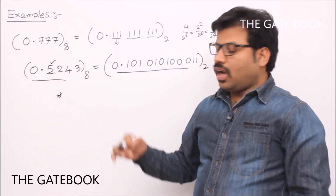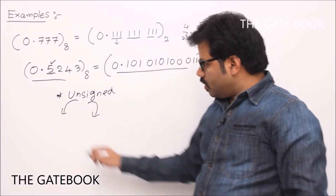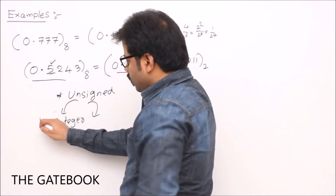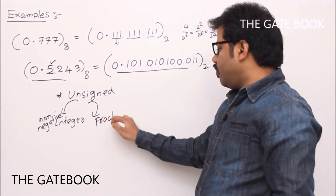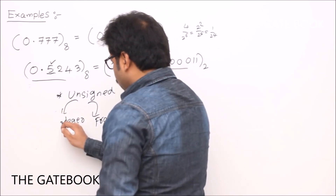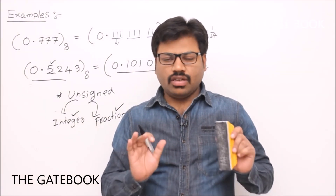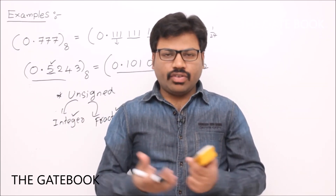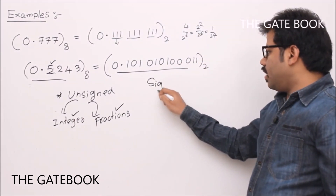Finally, we have understood how to represent all unsigned numbers. Unsigned numbers can be classified into two parts: non-negative integers, and fractions. We already saw non-negative integer representation and then fractional representation. Unsigned means there are no negative values automatically. So unsigned integers we have seen, unsigned fractions we have seen, and various conversions from one base to another base we have seen. Now we will be seeing how to represent negative numbers — so far we have seen positive numbers and zero. How to represent negative numbers? For that, we will see how to represent signed numbers.